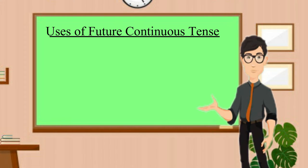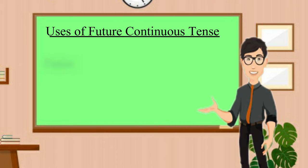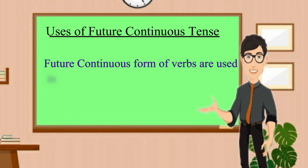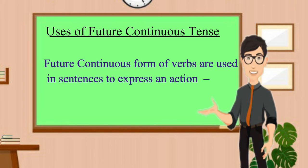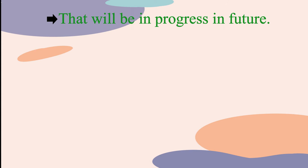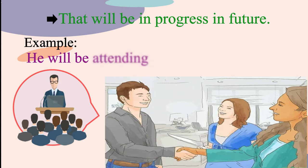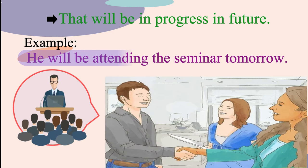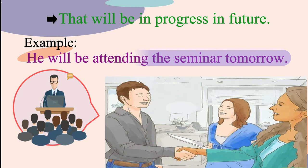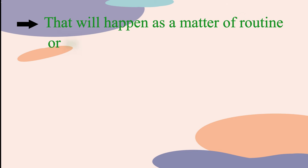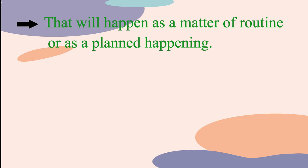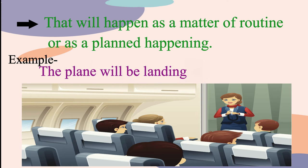Now let us see where the future continuous tense is used. The future continuous form is used to express an action which will be in progress in the future — meaning it will continue for some time. For example: he will be attending the seminar tomorrow. It is also used to express an action that will happen as a matter of routine or as a planned happening. For example: the plane will be landing in 20 minutes.